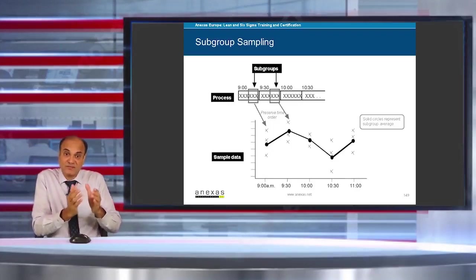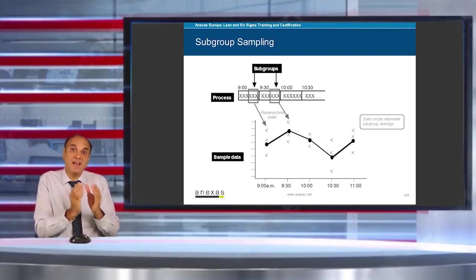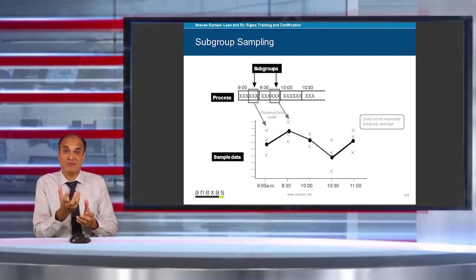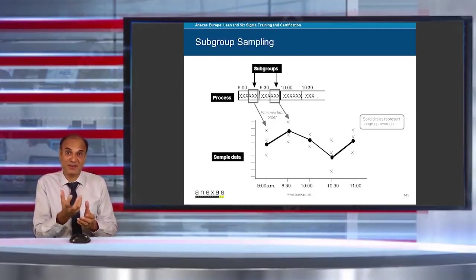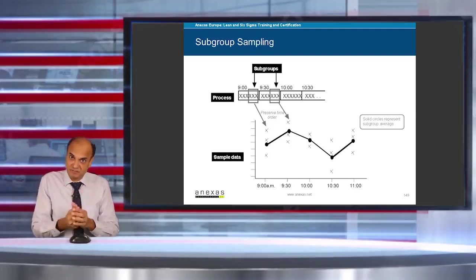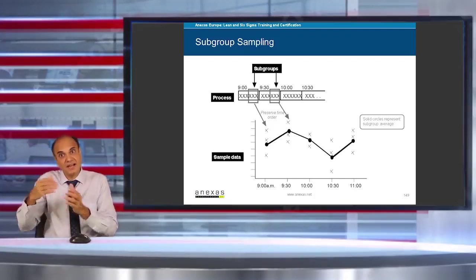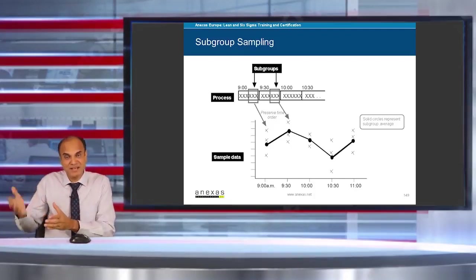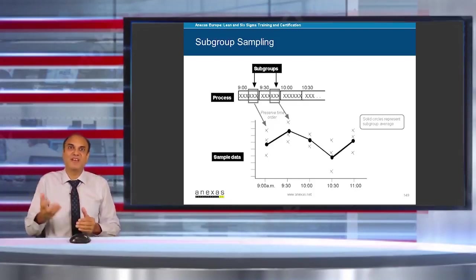At 8 a.m., you will collect five samples of chocolate, take the average weight of the chocolates, and that would be representative of the weight of that particular hour. At 9 a.m., again you collect five samples, again take the average. And again at 10 a.m. and 11 a.m., you keep on collecting five samples. So this is known as subgroup sampling.